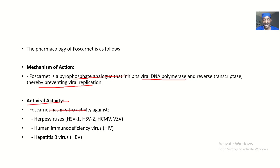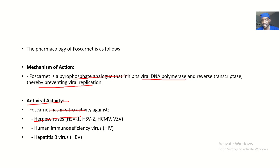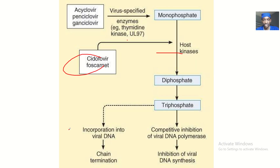For antiviral activity, Foscanet has in vitro activity against herpes virus type 1, type 2, and the varicella-zoster virus. It also has activity against the human immunodeficiency virus and the hepatitis B virus.